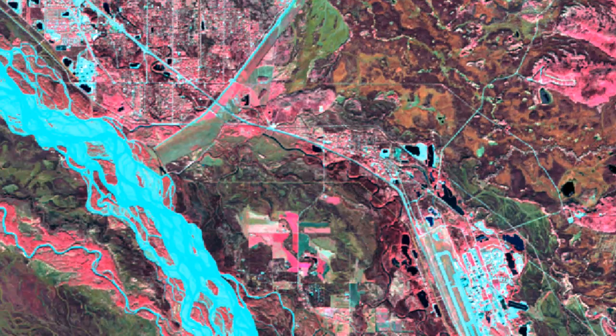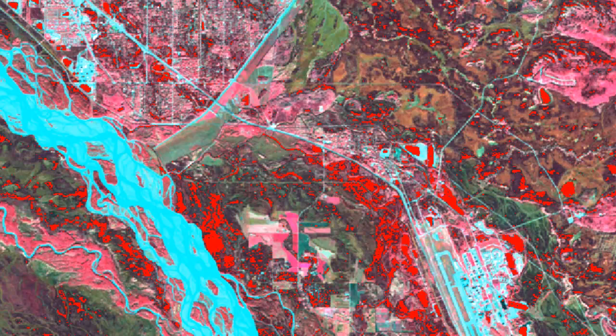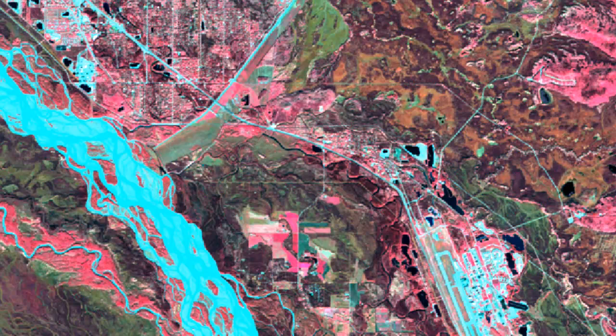We color code our spectral classes to match our land cover classes and might get something like this. In this case we do a pretty good job mapping land cover, except for one class which is a mixed class of open water and spruce — I'll color code that in red. All the pixels in red are in the same spectral class, and you can see some areas are spruce forest while others are water. Zooming in, gravel pits of open water and areas of black spruce are both classified into that same spectral class — that's called a mixed spectral class.